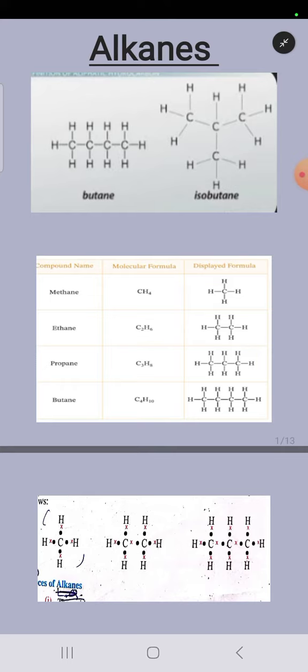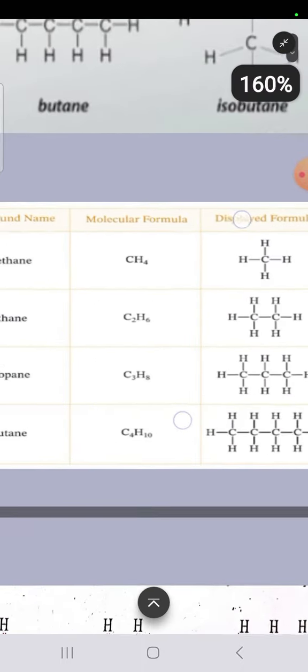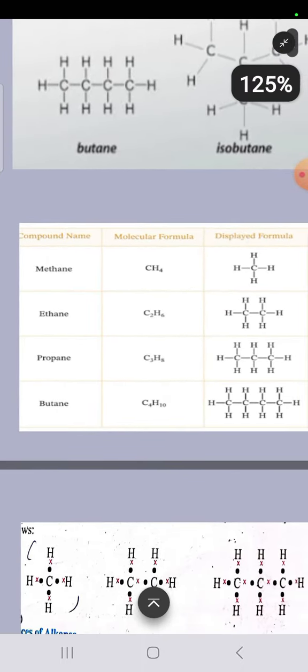All these alkanes form a very important homologous series. You have to tell me the definition of homologous series in the comment section. The homologous series of alkanes consists of methane, ethane, propane, butane and so on.